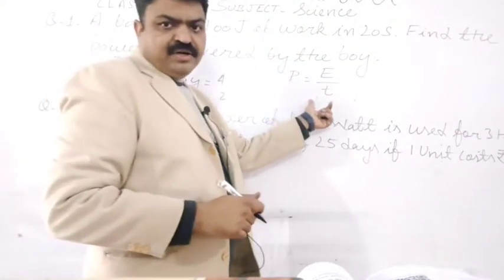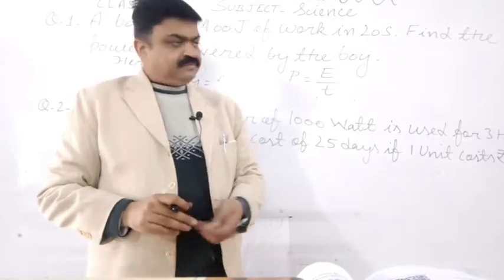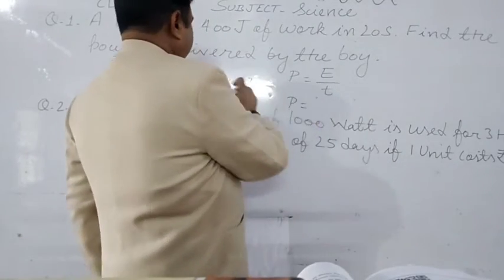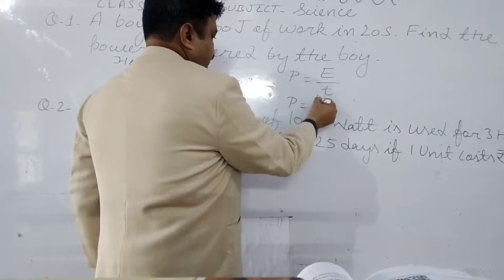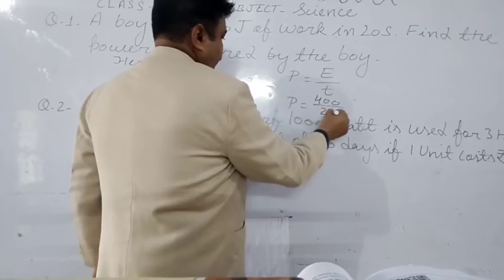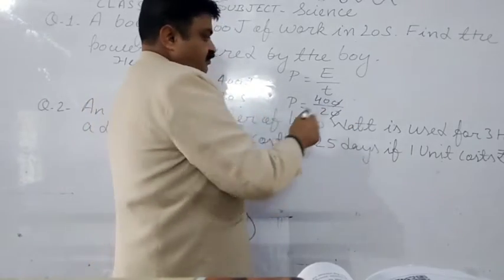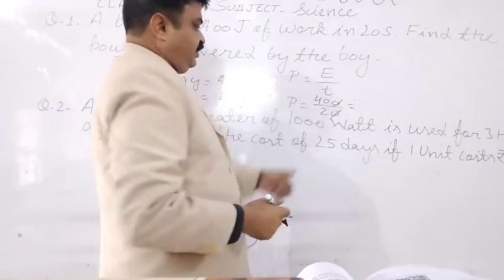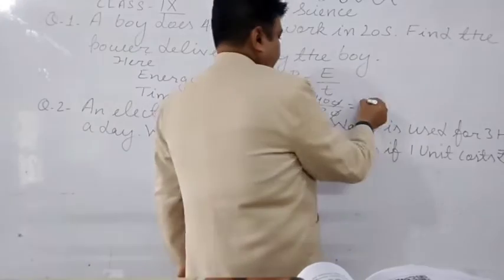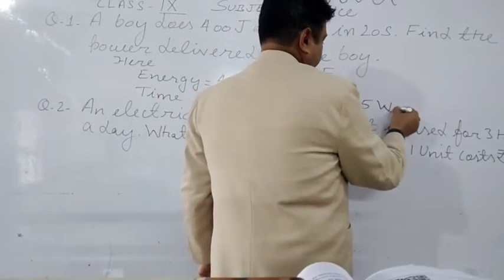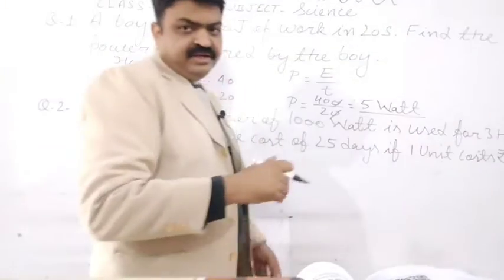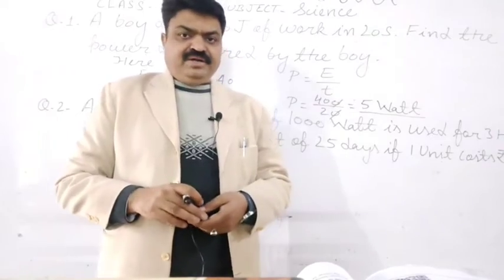Using the formula Power = Energy ÷ Time, the energy is 400 joules and the time is 20 seconds. So the power is 400 ÷ 20 = 5 watts. This is the power, or wattage, used by the boy.